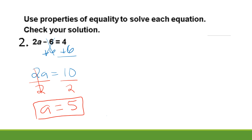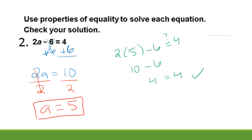This problem says check your solution. How could I check my answer? You could take your answer and plug it back in. Instead of 2 times A, I'm going to try 2 times 5. Does that equal 4? What's 2 times 5? 10. What's 10 minus 6? 4. So did it work? Yes. You can always know if you did this right by plugging it back in. You have calculators — you could quickly do it in your calculator.